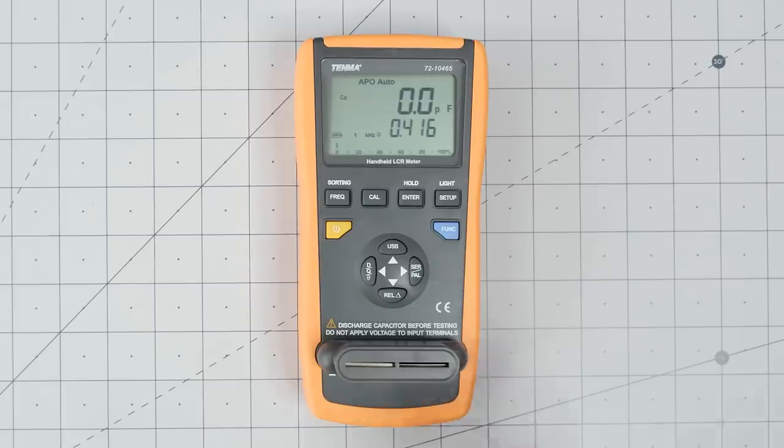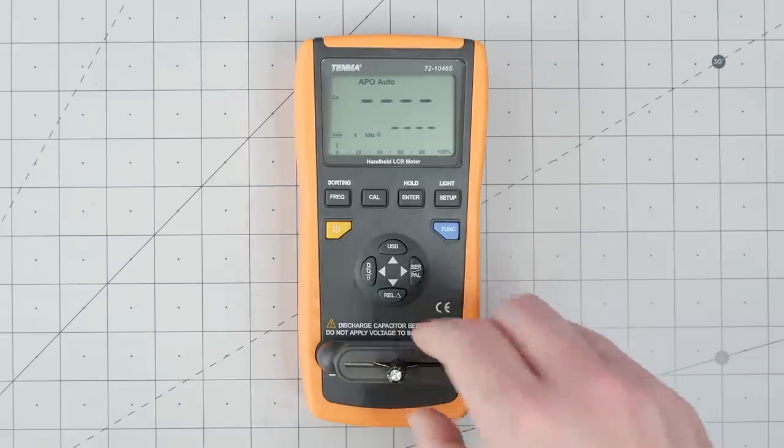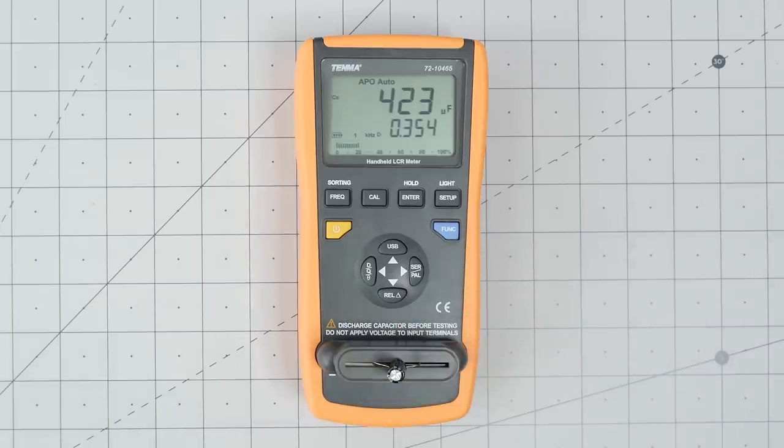Here is an aluminum electrolytic capacitor. The cathode is inserted on the side connected to the meter's negative terminal. With the meter in capacitance mode, it shows the value as 422 microfarads. Let's identify each of the areas of the screen.